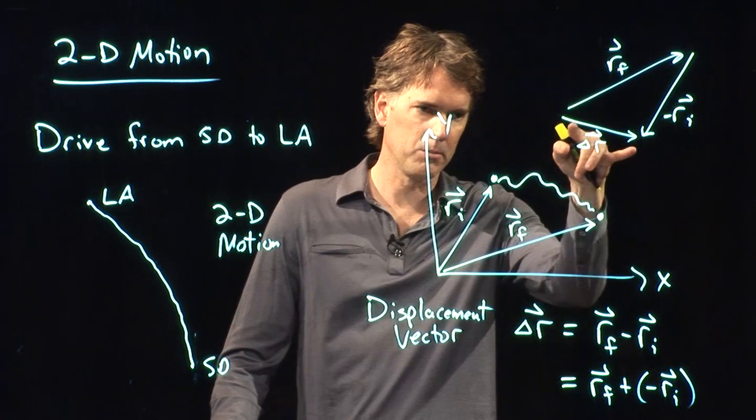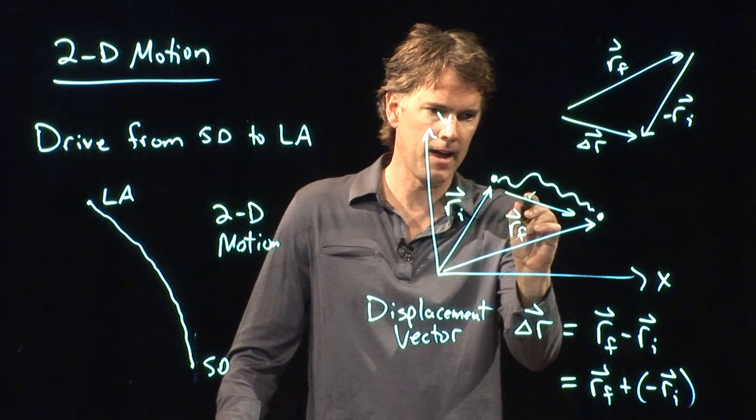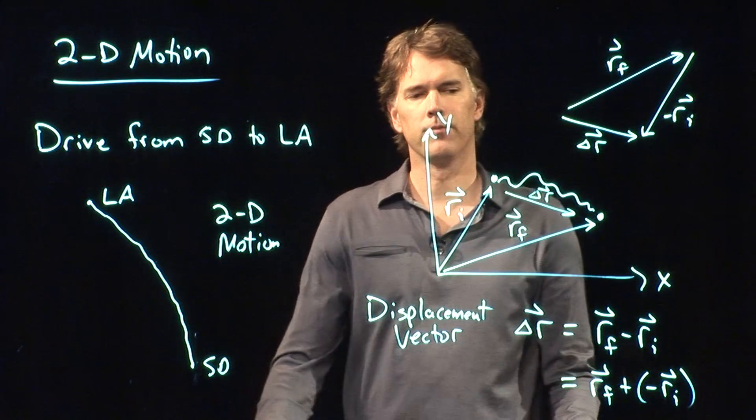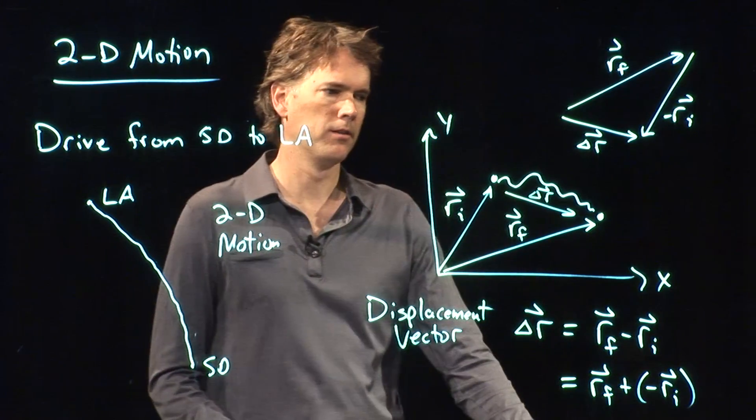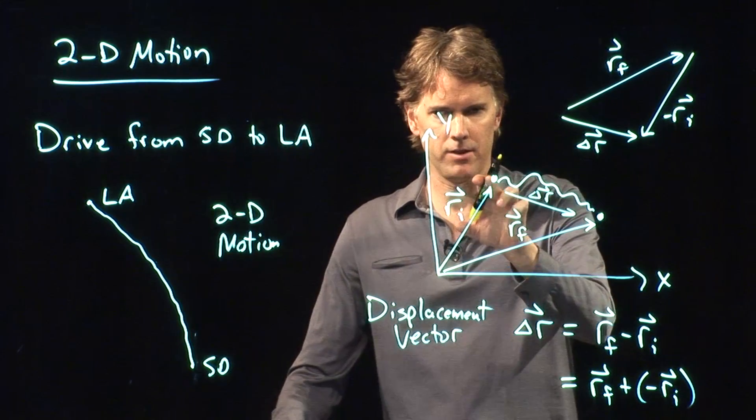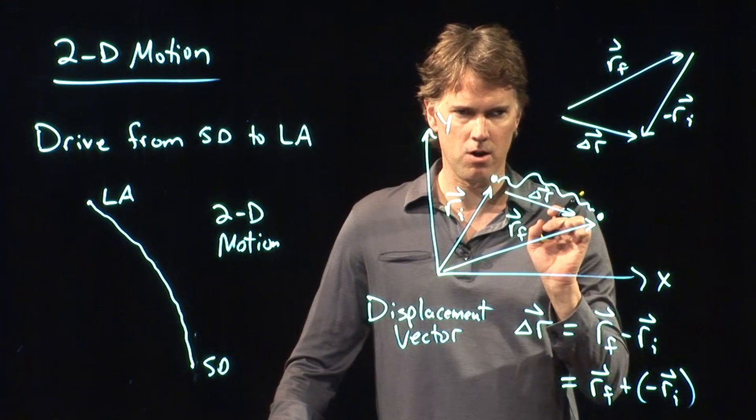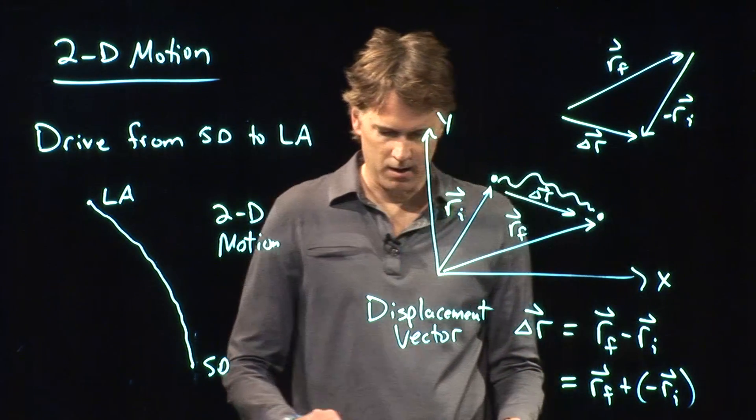Okay, where is it on our picture? That, if I move this over, it's exactly the same as that right there. Okay, that is your displacement vector. Start at the end of the RI, go to the end of the RF.